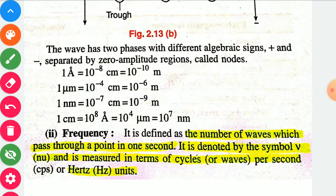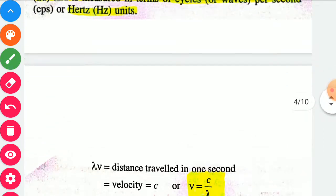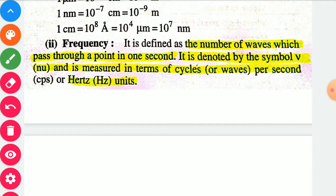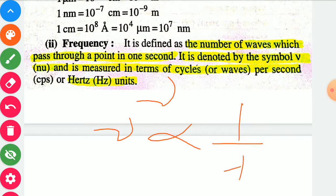Next point is frequency. Frequency is defined as the number of waves which pass through a point in one second, or the number of vibrations or oscillations in one second. Frequency is denoted by the symbol nu and measured in cycles per second or hertz. Frequency nu is inversely proportional to wavelength lambda, so we may write: nu equals C divided by lambda.